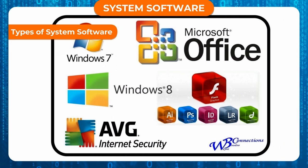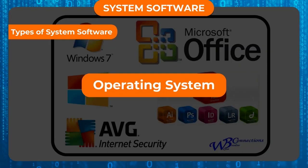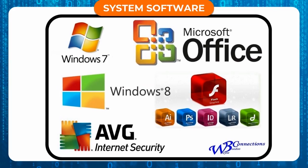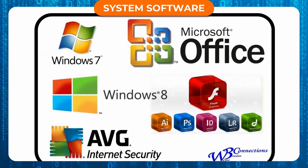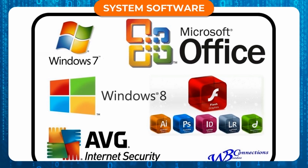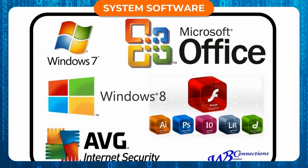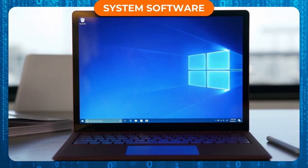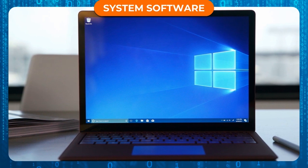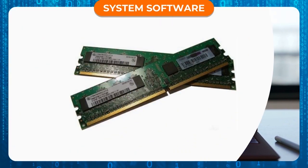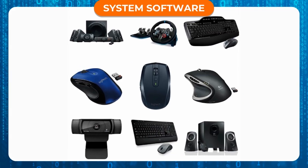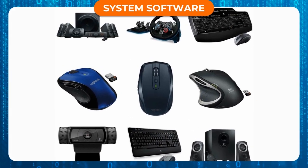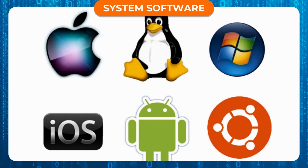Types of System Software. The most important type of system software is the Operating System. The operating system provides an interface between the user applications and the computer's hardware. It is the main program of a computer, with functions including allocating internal memory, preparation for programs, and controlling various types of devices.